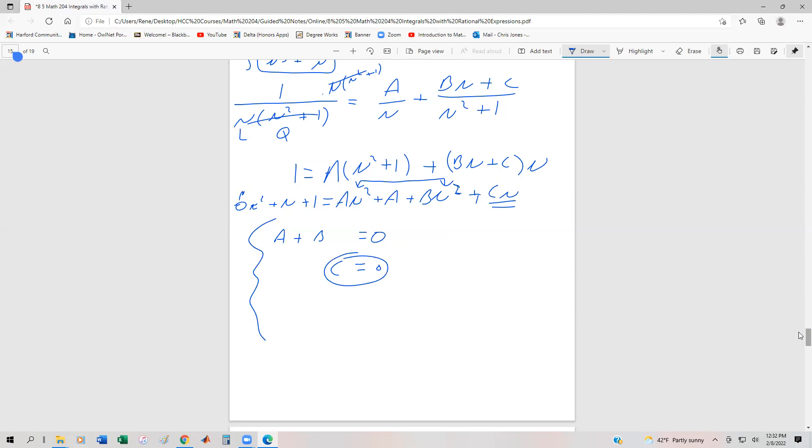which is really nice because that's done. And then we also have that A is equal to one because the only term that does not have a u within it. Which means that by default, one plus B equals zero. So that means that B equals negative one. So we have our three undetermined coefficients really quick.